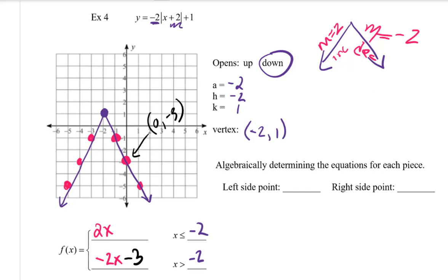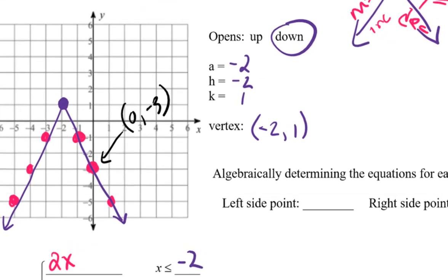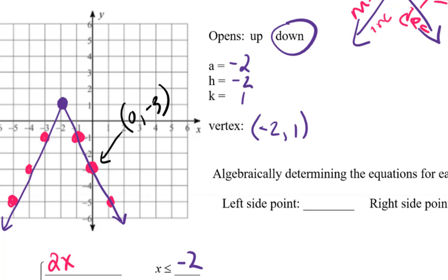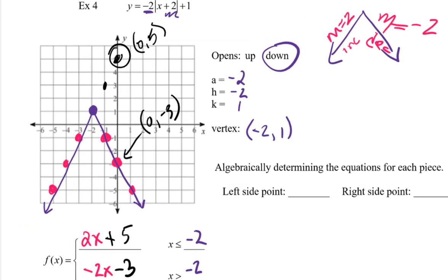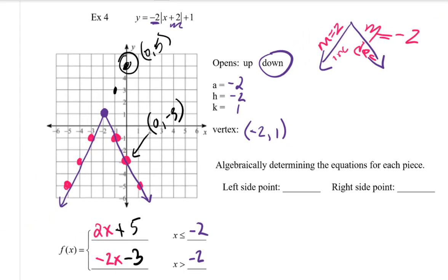Now I just have to figure out what the y-intercept is for the left-hand side. From the vertex, I'm going to continue that movement pattern — I'm going to go up one, two, over one; up one, two, over one. And I can see that that's going to intersect the y-axis at y equals five. So at zero, five, that's my other y-intercept — that's for the left-hand side. So that's plus five. Those are going to be my two equations that make up the piecewise function defined by the absolute value function y equals negative two times the absolute value of x plus two plus one.